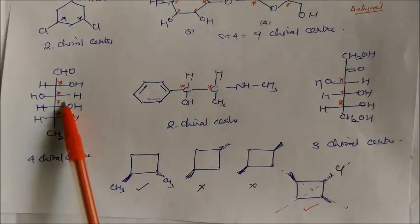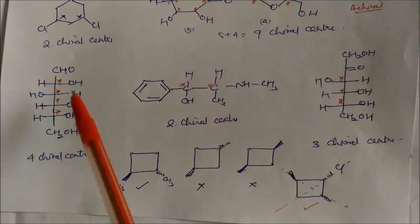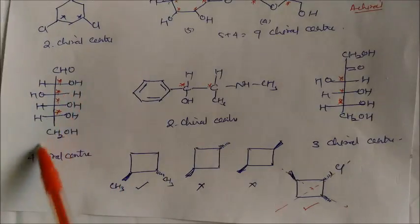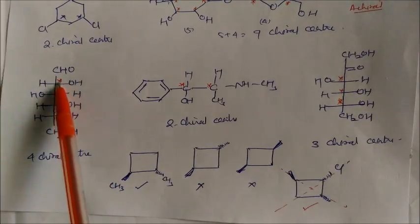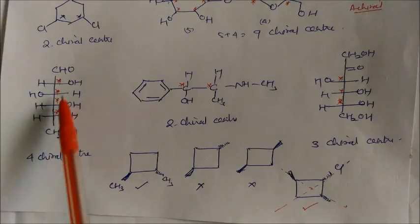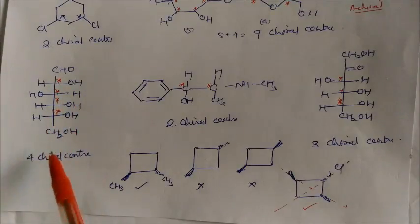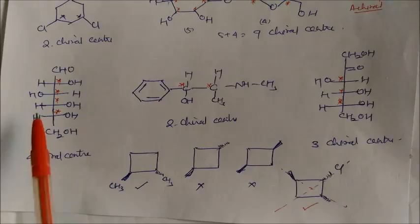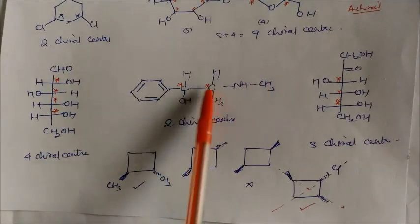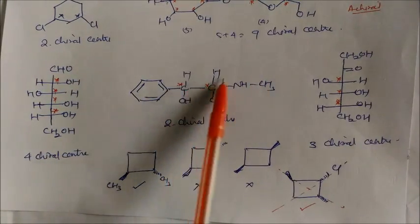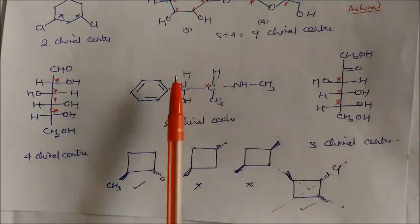Now if you see here, this compound is glucose. In this molecule, this carbon is chiral, this is chiral, this is chiral, and this is chiral — so there are four chiral centers in one molecule of glucose. In this other molecule, this is chiral and this is chiral — so there are two chiral centers in this whole molecule.